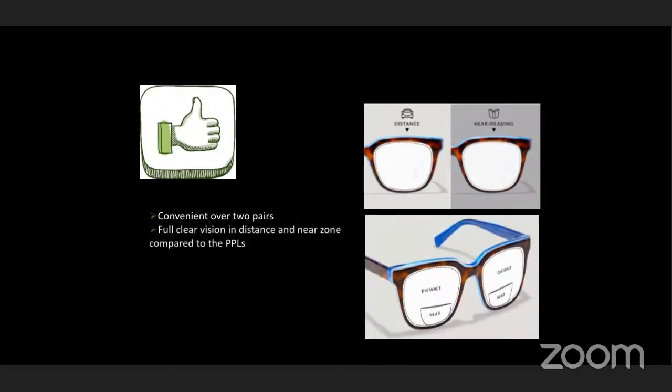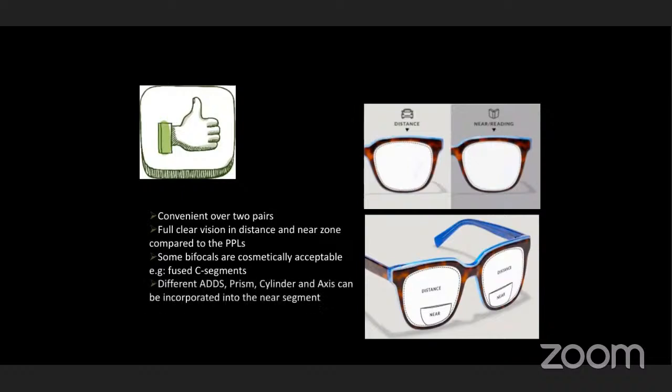Now coming to the advantages of bifocal lenses: it is convenient over two pairs — rather than having separate pairs for distance and near and continuously switching, the bifocal gives you both in one lens. There is full clear vision in both distance and near zones compared to PPLs — personalized progressive lenses — which have peripheral distortion or unwanted astigmatism at the edges. Some bifocals are cosmetically acceptable, for example fused bifocal. Additionally, different add powers, prism, cylinder, and axis can be incorporated into the near segment.